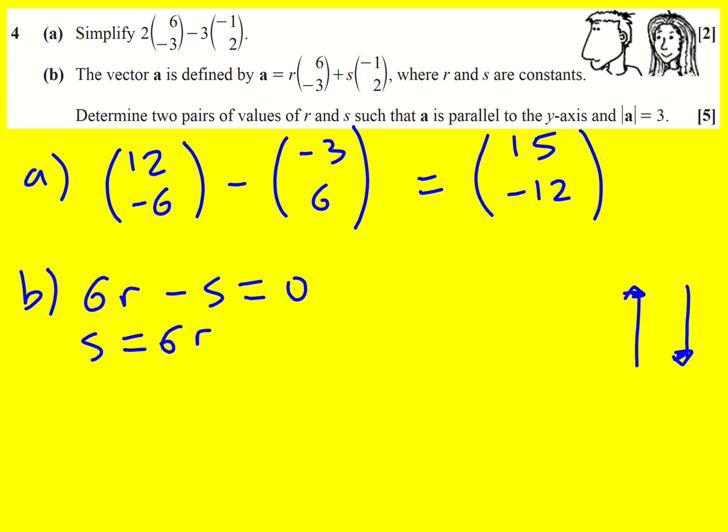At this point, let's express the vector in terms of r. So a equals 6r minus 3r, plus, if I replace s by 6r, it's minus 6r. We can see these are going to cancel out. And then plus 12r, which simply leaves me (0, 9r).